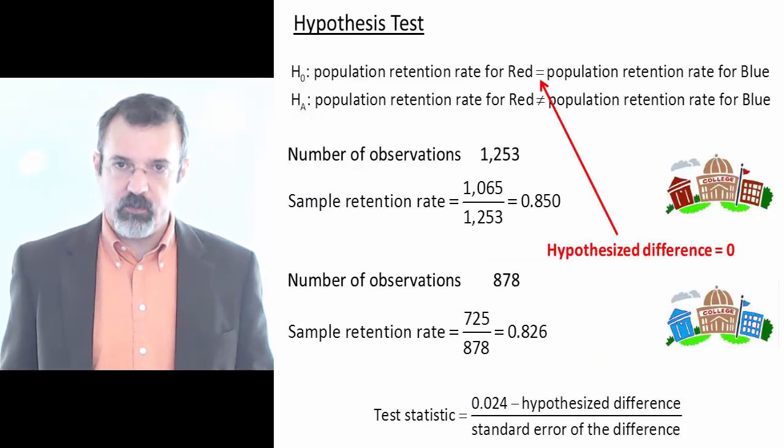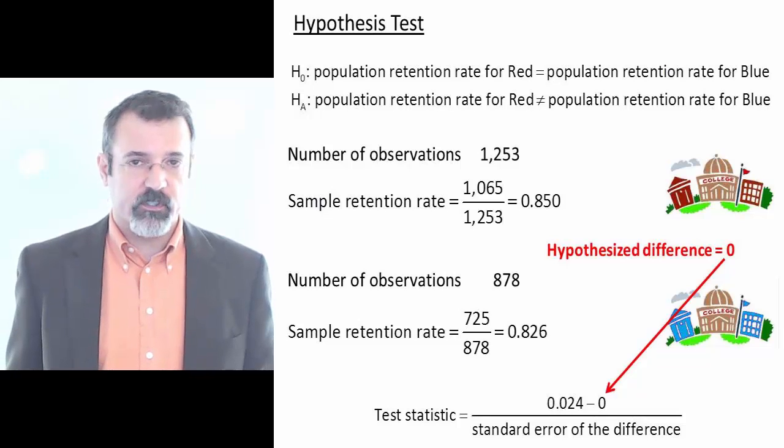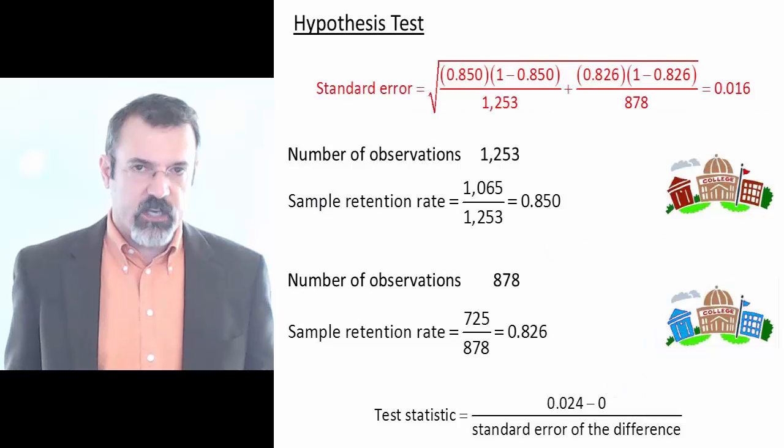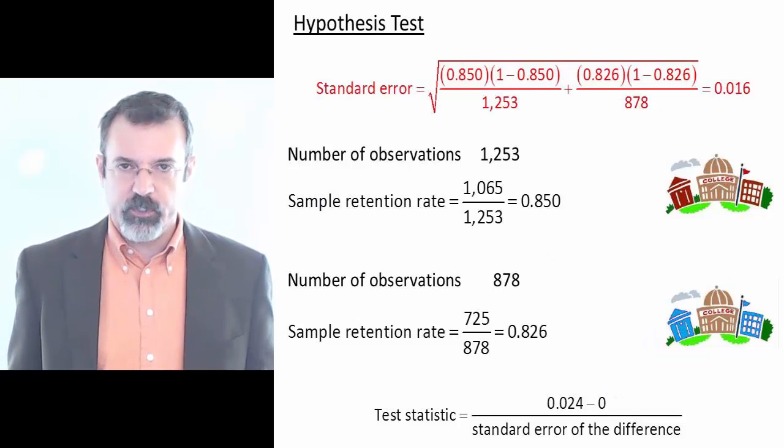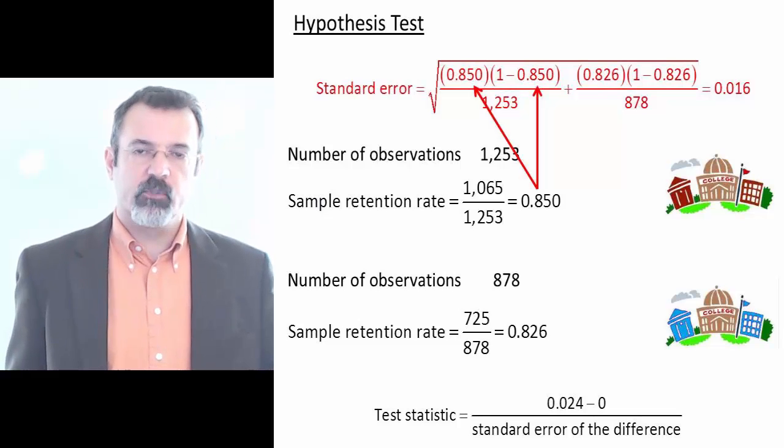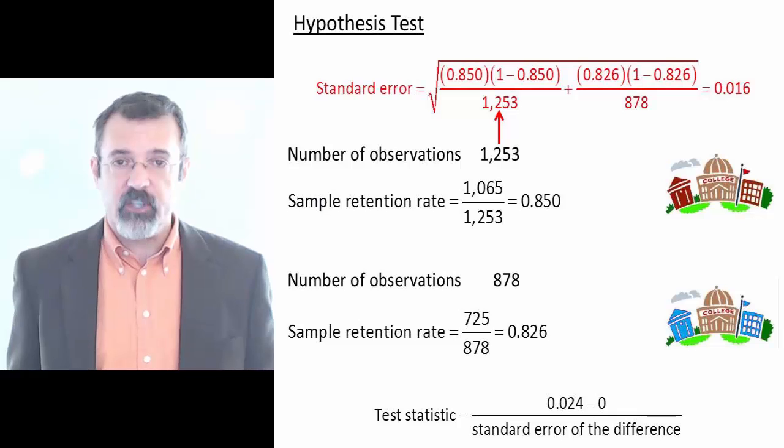We're hypothesizing that the two retention rates are the same, so our hypothesized difference is zero. We're looking at a difference in proportions. The standard error of a difference in proportions is the square root of the first sample proportion, times one minus the first sample proportion, divided by the number of observations in the first sample,